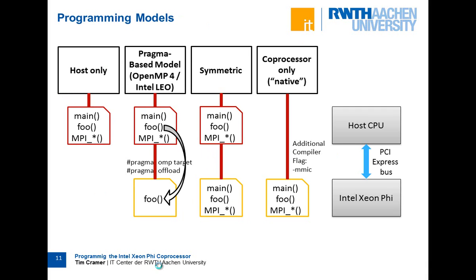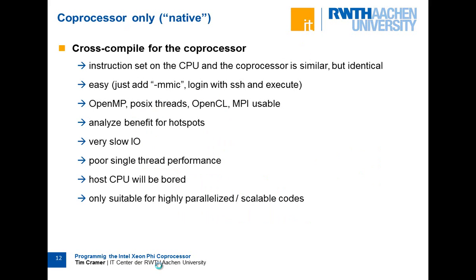Some details on native execution: the instruction set on the CPU and coprocessor is similar - both are x86 - but the instruction set is not identical and it is not binary compatible. You cannot copy the normal binary and use it on the Xeon Phi; you have to use the dash-m-mic flag for cross-compilation. This is easy though - the cross-compiler works quite well. After compiling you can just log into the device and run it. I/O is very slow and single-thread performance is poor, but you can quickly test how your application behaves and get a first impression of whether it's worth the effort.